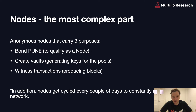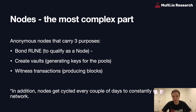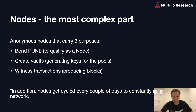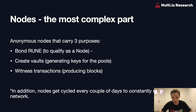The nodes are the most complex part. The anonymous nodes carry three purposes. First, they bond RUNE to qualify as a node — currently requiring one million RUNE, around $100,000 USD. Importantly, RUNE cannot be delegated, unlike EOS where block producers can have staking delegated to them. Nodes also create vaults — essentially the wallets where the pools are held — and they witness transactions by producing blocks. An interesting feature is that nodes naturally get cycled every couple of days to constantly renew the network. Older nodes get kicked out automatically but can cycle back in, provided they update their software to the latest version. This ensures the network is constantly updating itself.